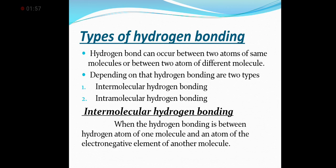There are two types of hydrogen bonding. Hydrogen bonding can occur between two atoms of the same molecule or between two atoms of different molecules. Depending upon this, hydrogen bonding is of two types: intermolecular hydrogen bonding and intramolecular hydrogen bonding.